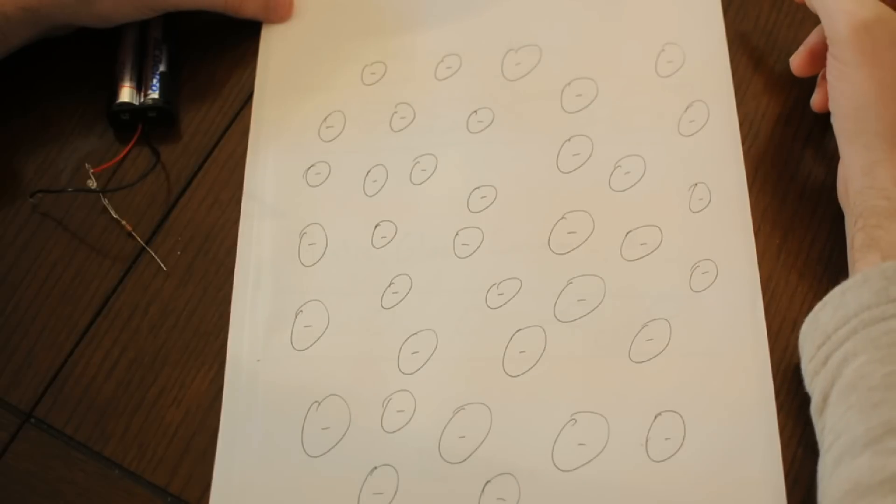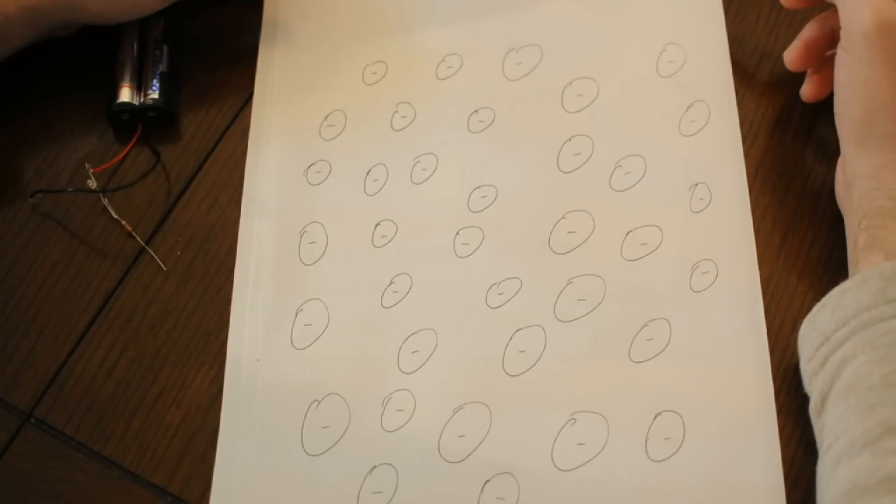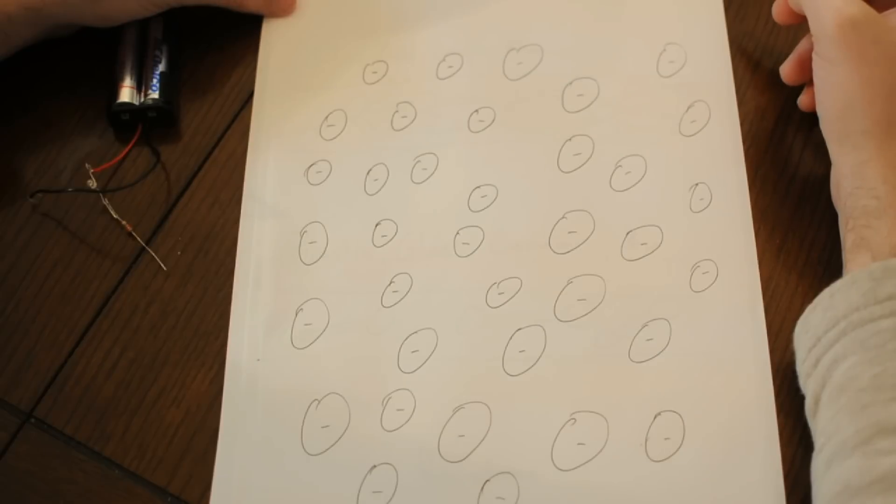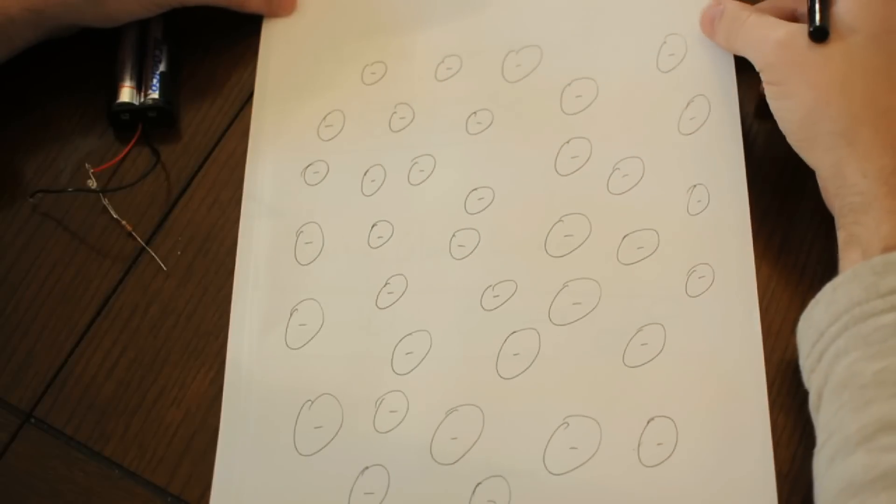Electrons don't like being next to each other, so we provide them a path to somewhere that's less crowded, and then along that path we ask them to do some work for us. And that work might be generating heat, it might be generating light, maybe we use them to create a magnetic field and drive a motor, or maybe we just park them somewhere to record some information.